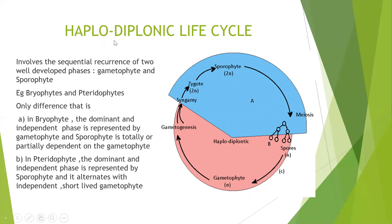The third life cycle is the haplodiplontic life cycle. This involves the sequential reoccurrence of two developed phases. Both the gametophyte and sporophyte are well developed and alternate with each other. You see this type of life cycle in bryophytes and pteridophytes. The difference is that in bryophytes, the dominant phase is the gametophytic phase which is independent, and the sporophyte is totally dependent on the gametophyte. Whereas in pteridophytes, the dominant independent phase is the sporophyte, and here the gametophytic phase is also independent. So in the haplodiplontic life cycle, both the gametophytic as well as the sporophytic phase are well developed and have equal life span in the whole life cycle.